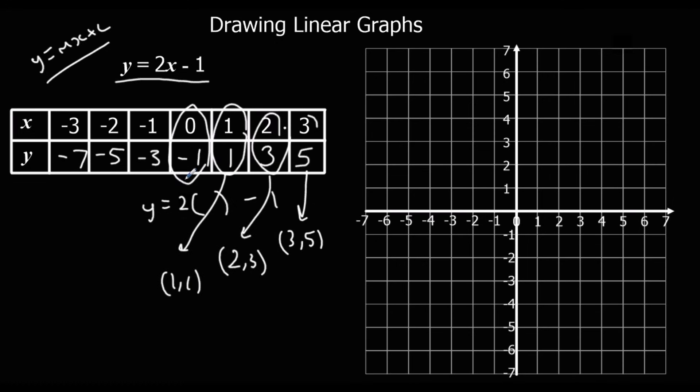0 minus 1. So x first, then y remember. And we can just plot these onto the graph. So 3, 5. 2, 3. 1, 1. 0 minus 1.